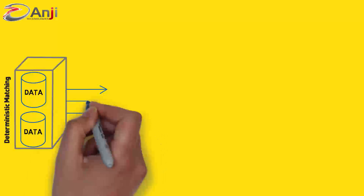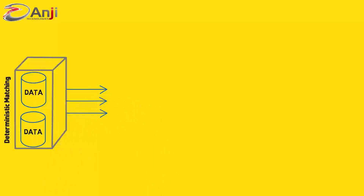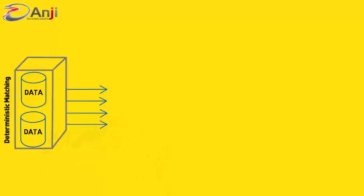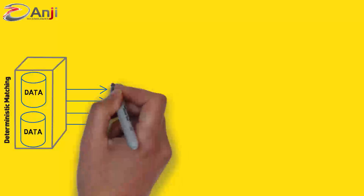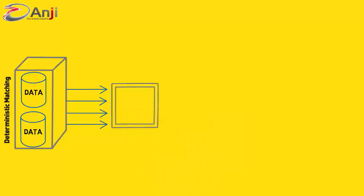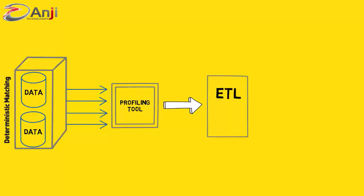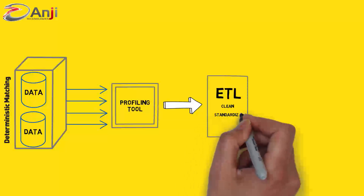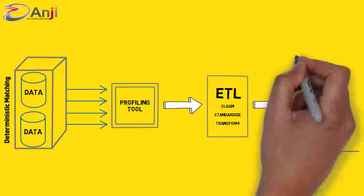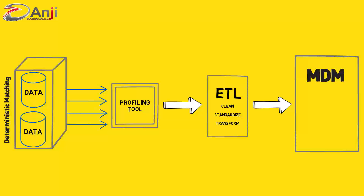As data is never 100% clean, this requires some level of upfront work for deterministic matching to work. The data source travels to a profiling tool and integrates using the ETL process, where it is cleansed, standardized, and transformed. The data then travels to an MDM hub for matching.